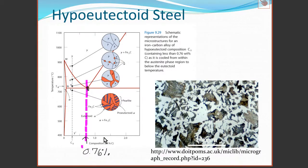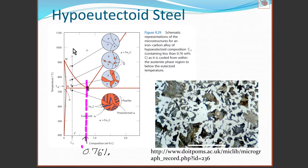The eutectoid composition is 0.76 percent carbon. If we're below that we have a hypo-eutectoid composition steel; above that we have a hyper-eutectoid steel. Let's look at an example of a hypo-eutectoid steel.